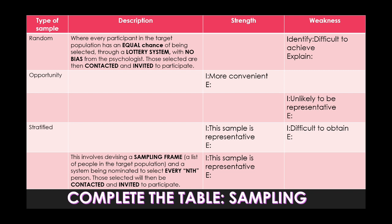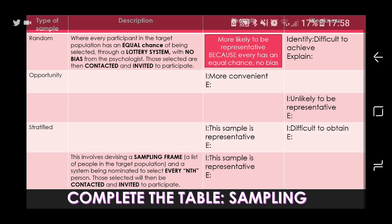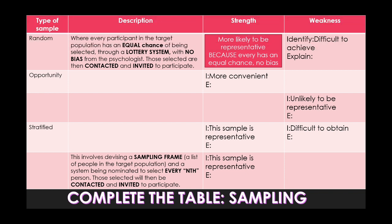What is the strength of random sampling? Because it works on this chance system and there's no bias imposed by the researcher, it is technically more likely to give you a representative sample because everybody's got an equal chance. If chance works accordingly, you should end up with a really varied group of people because there's no bias being imposed on your selection process. So the strength is that it does normally end up being more representative.